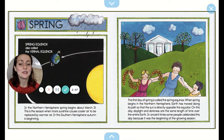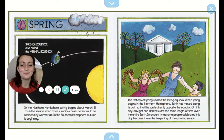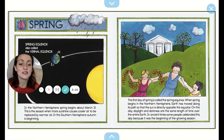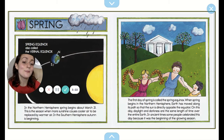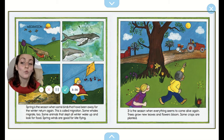Spring! In the northern hemisphere, spring begins around March 21st. This is the season when more sunshine causes cooler air to be replaced by warmer air. In the southern hemisphere, autumn is beginning. The first day of spring is called the spring equinox. When spring begins in the northern hemisphere, earth has moved along its path so that the sun is directly opposite the equator. On this day, daylight and darkness are the same length of time over the entire earth. In ancient times, some people celebrated this day because it was the beginning of the growing season. Spring is the season when some birds that have been away for the winter return again — it's called migration. Some whales migrate too.